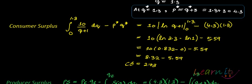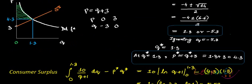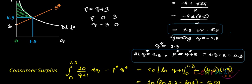Wait — that gives 0.832 − 5.59. Correcting: 10×log(2.3) = 8.32, so consumer surplus = 8.32 − 5.59 = 2.73. This is the consumer surplus and the first answer. Now for producer surplus: it is the area below the equilibrium price and above the supply function.